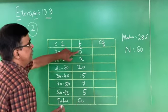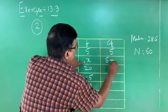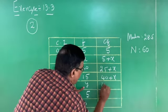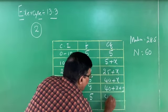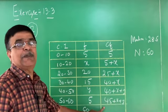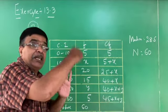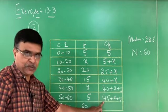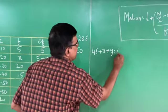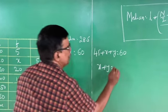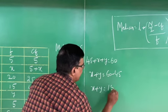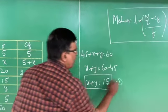Building the cumulative frequency column: 5, 5+X, 5+X+20 = 25+X, 25+X+15 = 40+X, 40+X+Y, 40+X+Y+5 = 45+X+Y. The total N = 60, so the last CF: 45 + X + Y = 60, giving X + Y = 15. This is Equation 1.